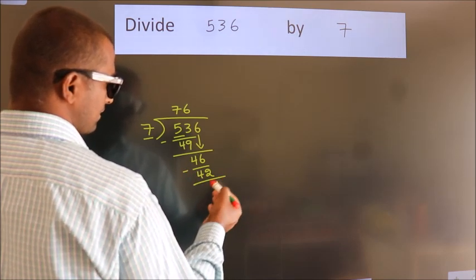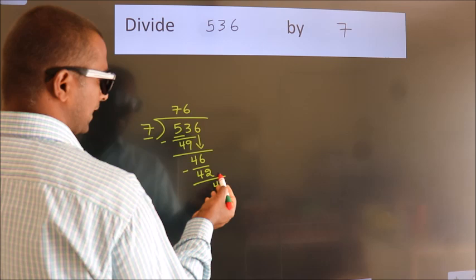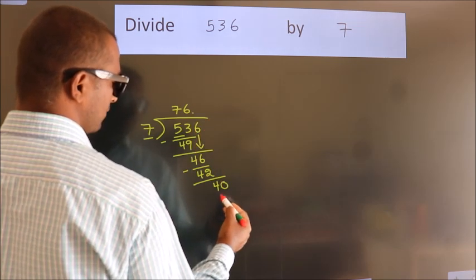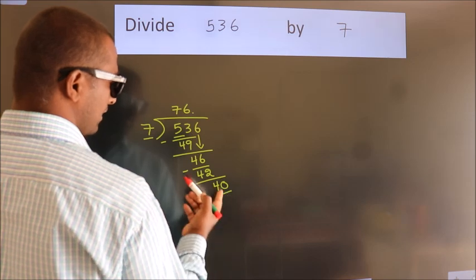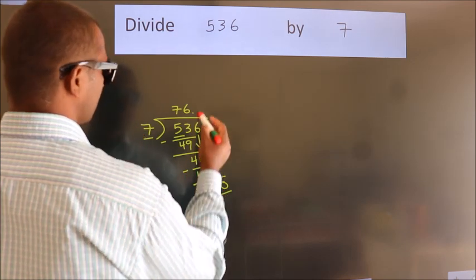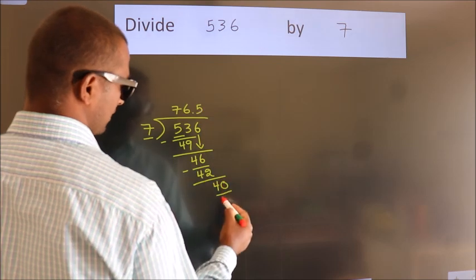After this, no more numbers to bring down. So what we do is put a dot and take 0. So 40. A number close to 40 in the 7 table is 7 times 5 equals 35.